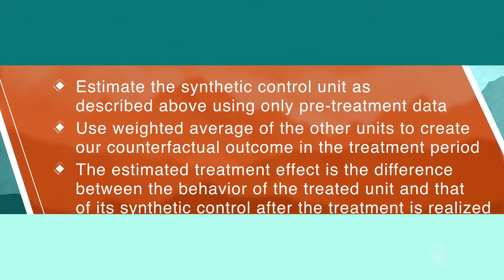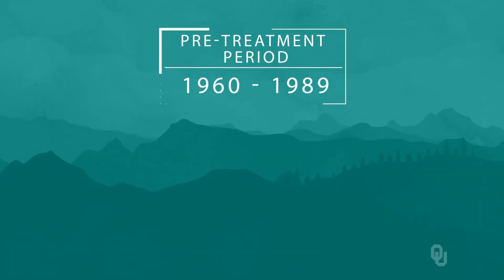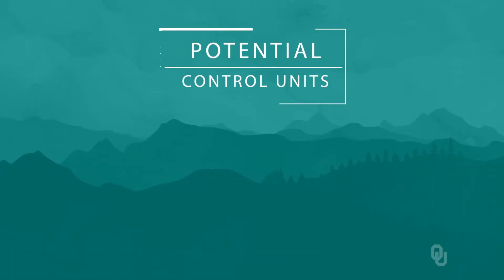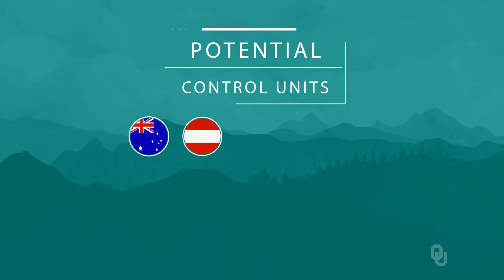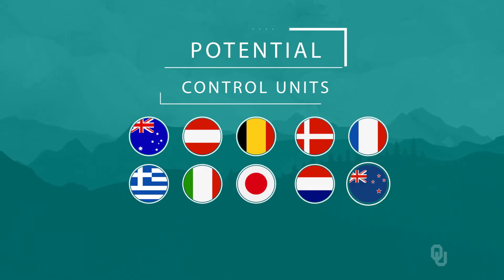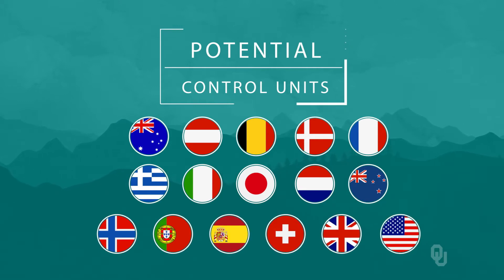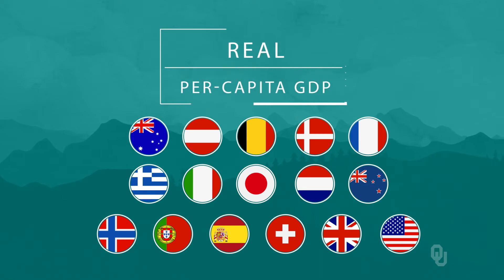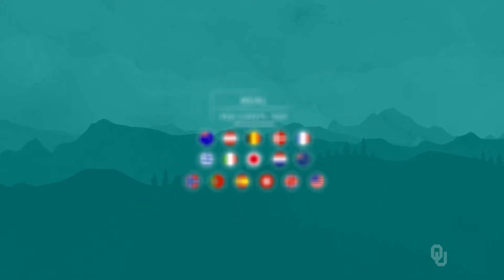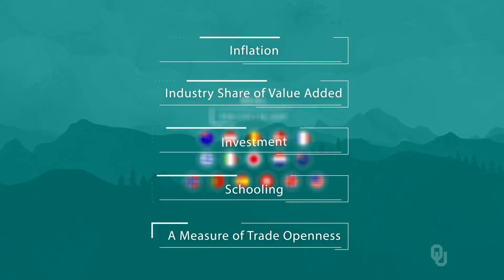Let's consider an example from the literature. In 2015, Abadi, Diamond, and Heinmuller published a paper in the American Journal of Political Science that used synthetic control to estimate the effect reunification had on West Germany. Their pre-treatment period was 1960 through 1989. Their potential control units were Australia, Austria, Belgium, Denmark, France, Greece, Italy, Japan, the Netherlands, New Zealand, Norway, Portugal, Spain, Switzerland, the United Kingdom, and the United States. The outcome variable they studied was real per capita gross domestic product. The characteristics they chose to match on were inflation, industry share of value added, investment, schooling, and a measure of trade openness.